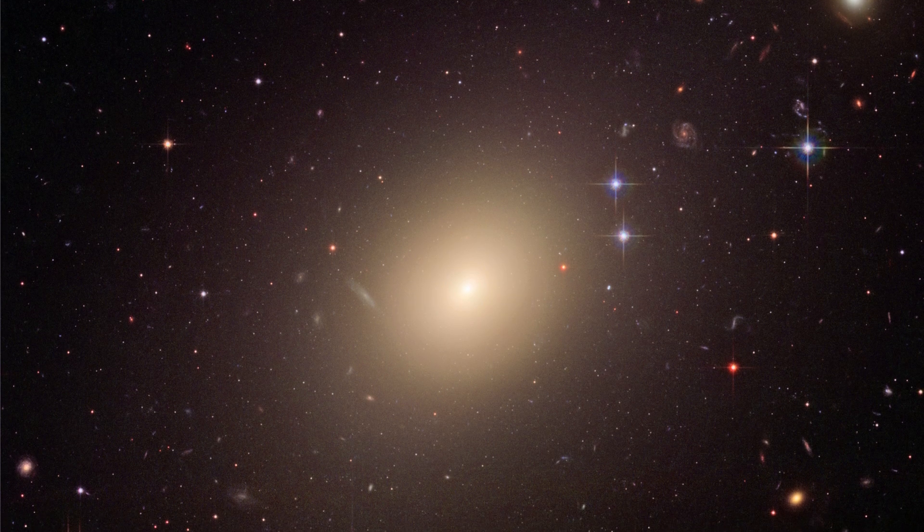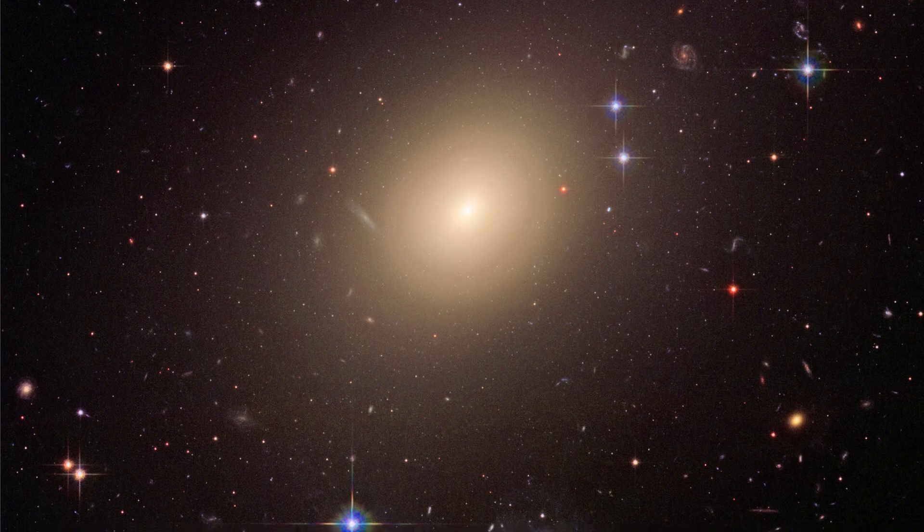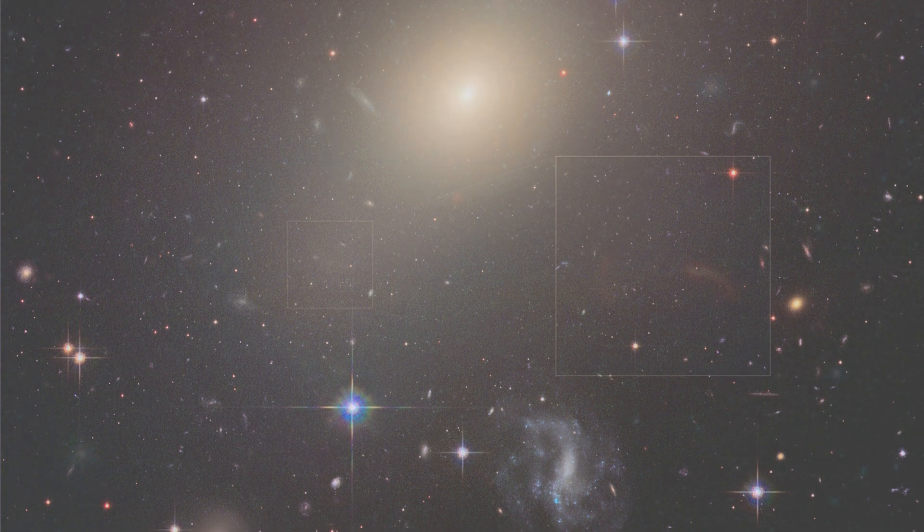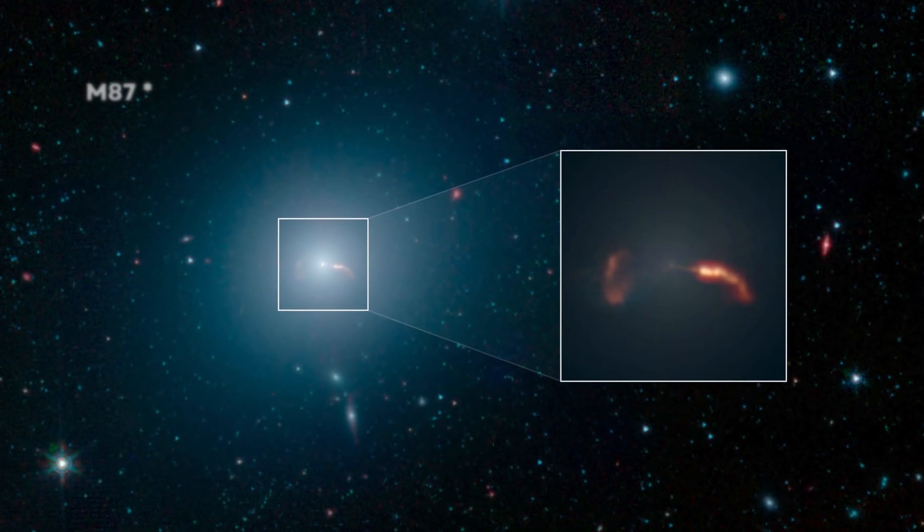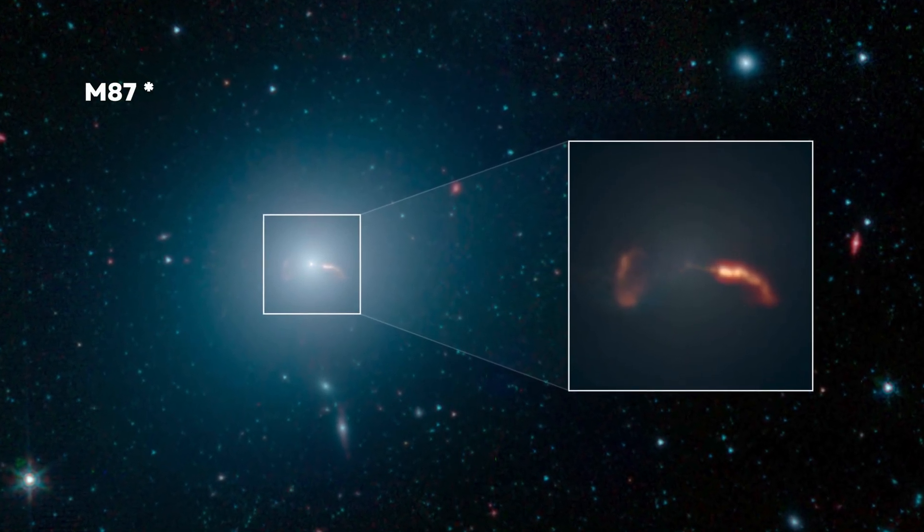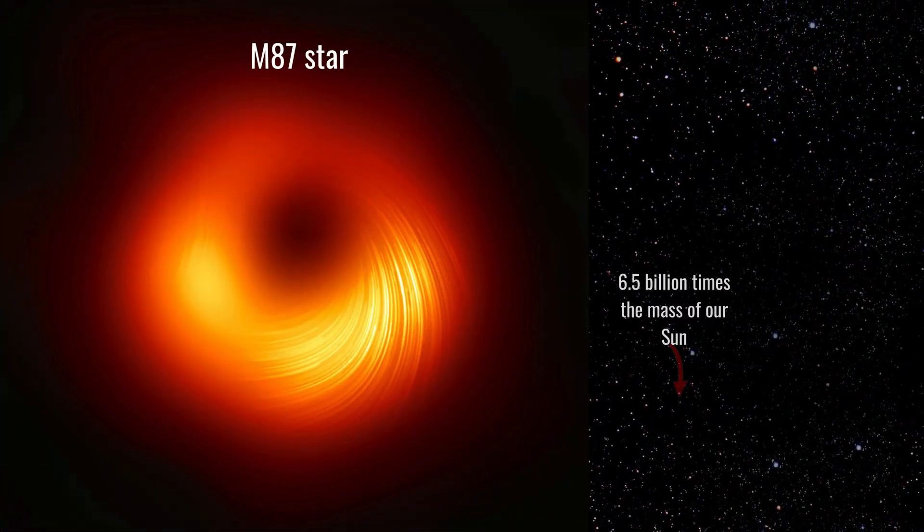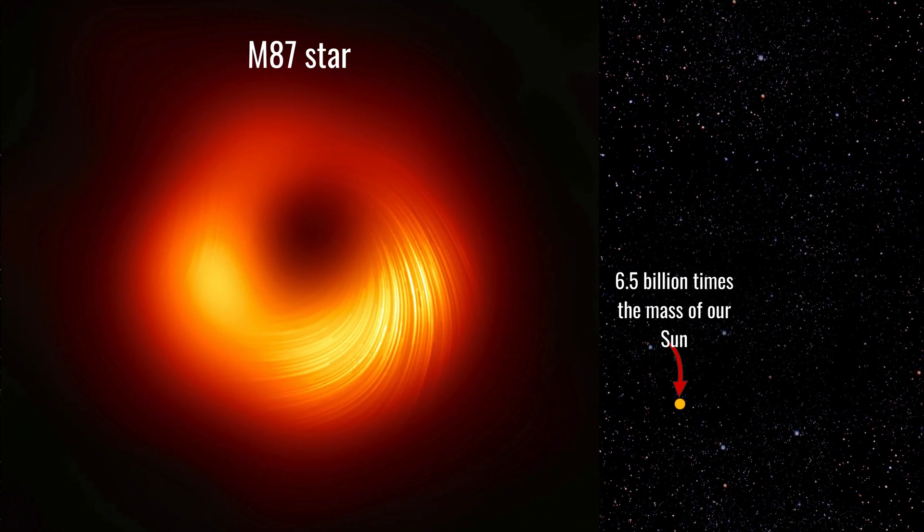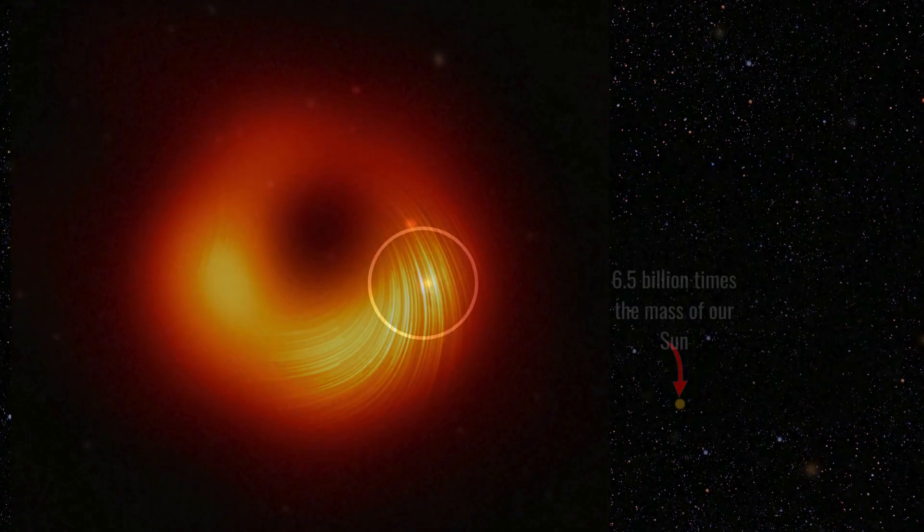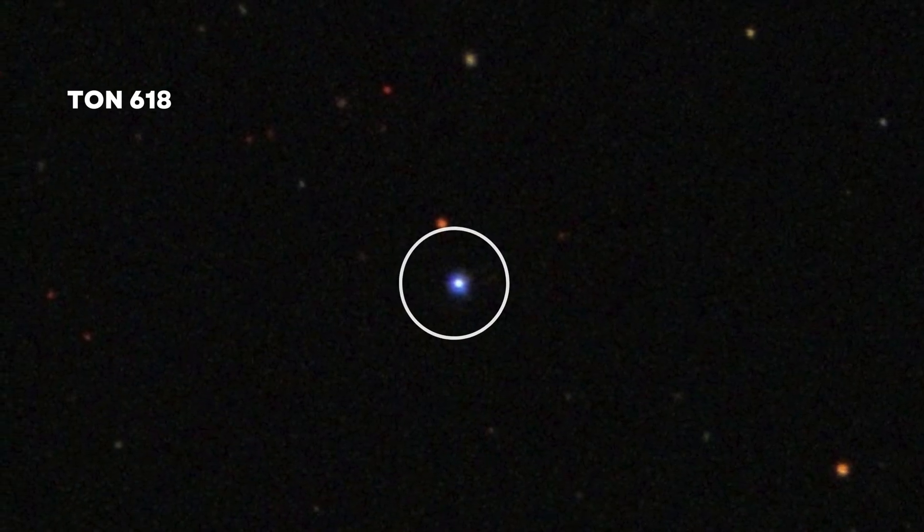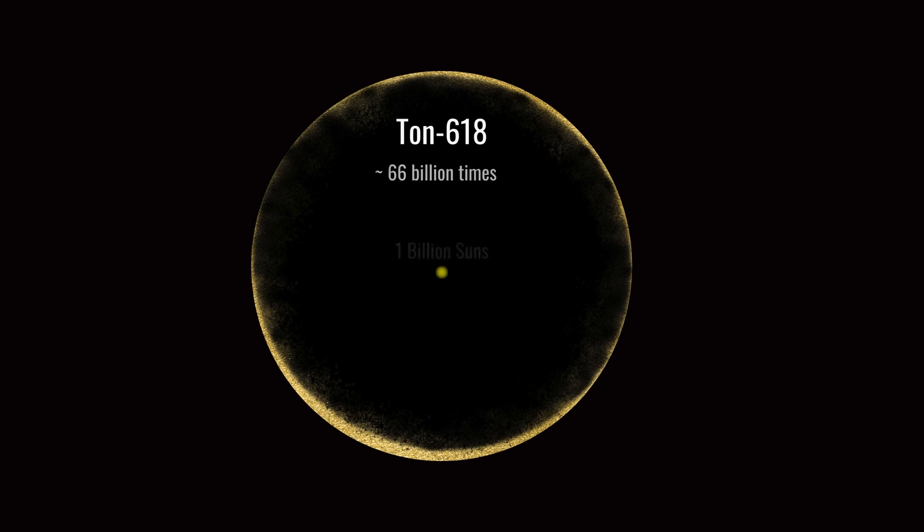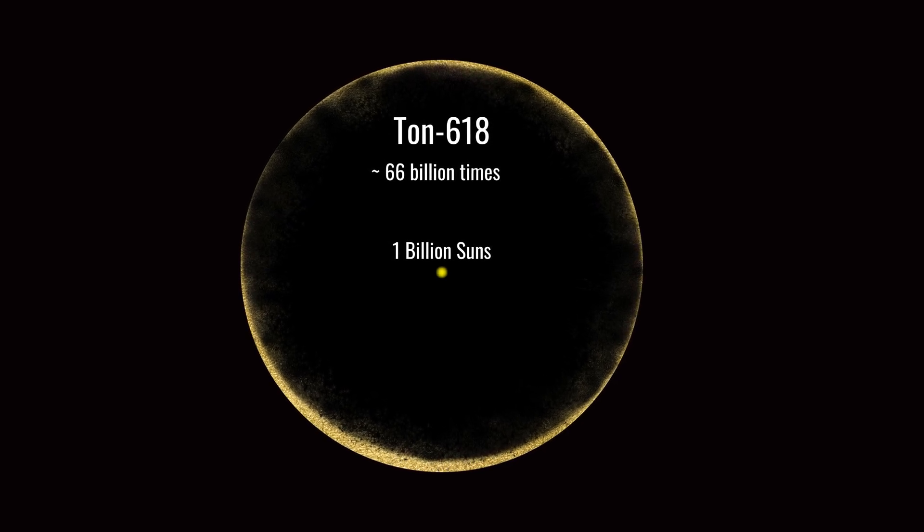Some of the largest supermassive black holes reside in giant elliptical galaxies. Take the one at the center of the galaxy M87, known as M87 star. It's about 6.5 billion times the mass of our Sun. And then there's TON 618, one of the largest known, with a mass of around 66 billion times that of the Sun.